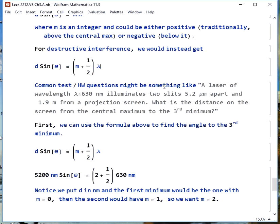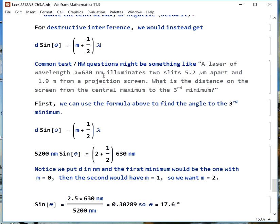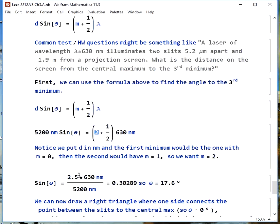What kind of test question could you get, or homework question, it could be something like this. A laser of wavelength λ = 630 nm illuminates two slits 5.2 μm apart and 1.9 m from a projection screen. What is the distance on the screen from the central maximum to the 3rd minimum? So, what we need to find is the angle to the third minimum. We find that from d sin(θ) = (m + 1/2)λ. d is the 5.2 microns, which we can write as 5200 nanometers, so we're using the same units for light wavelength and slit separation. And here, you notice I've set m equals 2. The reason is the first minimum would have m equals 0. The second would be m equals 1. So, the third minimum is m equals 2.